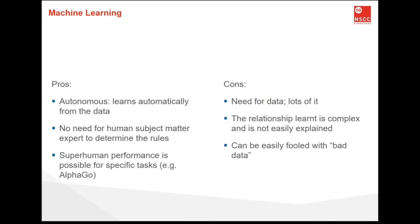Every coin has two sides, each with its own properties. It's time to uncover the advantages of machine learning — a very powerful tool that holds the potential to revolutionize the way things work. First and most importantly, machine learning can reveal large volumes of data and discover specific trends and patterns that would not be apparent to humans. For instance, for an e-commerce website like Amazon, it serves to understand the browsing behaviors and purchasing histories of its users to help cater the right products, deals, and reminders relevant to them, and uses the results to serve relevant advertisements.